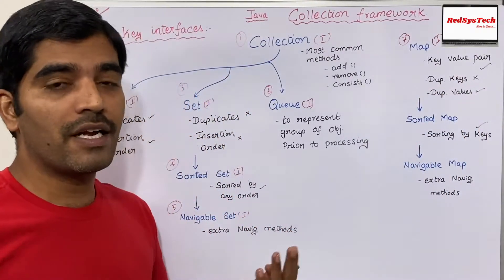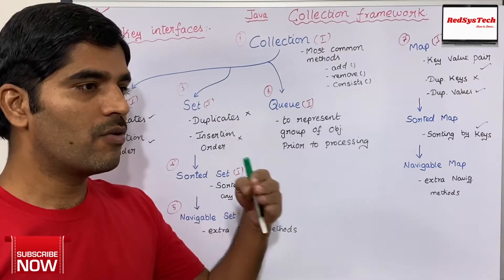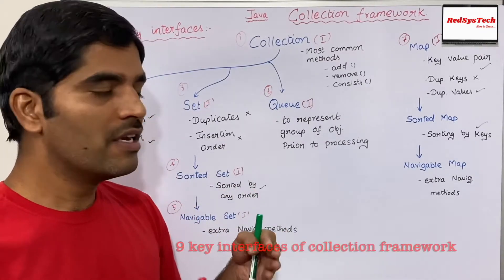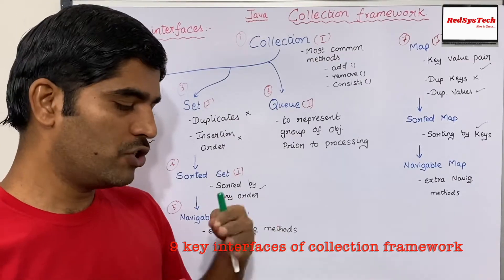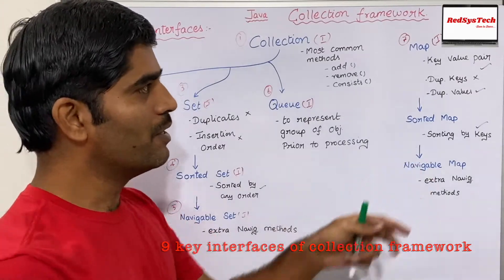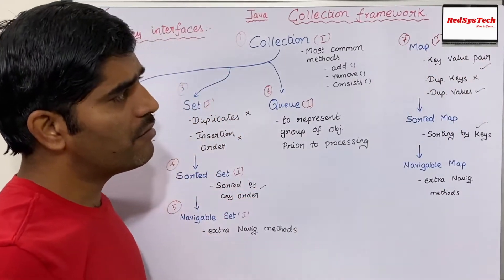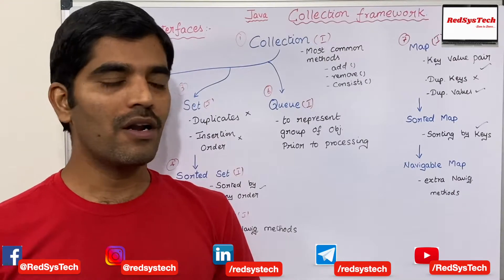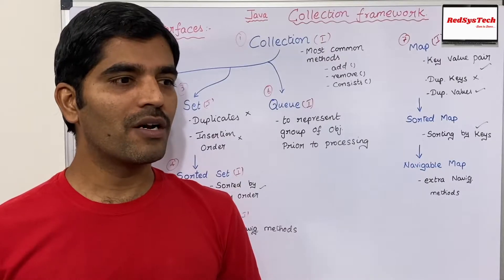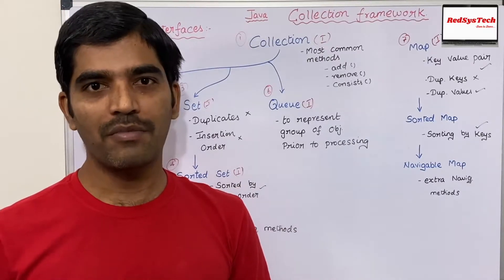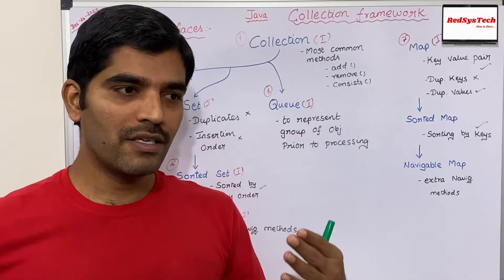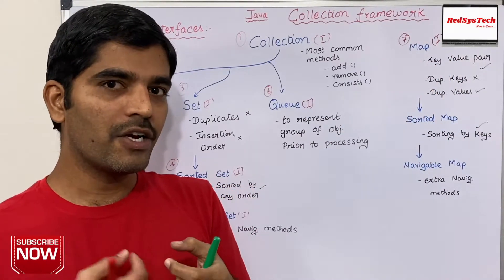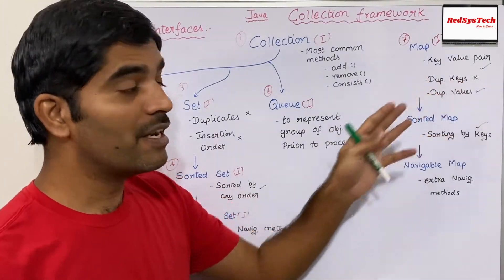However, Map does allow duplicate values. For example, roll number 101 with the name Karthik, and roll number 102 also with the name Karthik — that is allowed since the keys are different. But inserting another record with the same key 102 would not be allowed because keys are duplicated. Map is very useful in real-time programming when you need to navigate through multiple records in a student database or similar scenario.